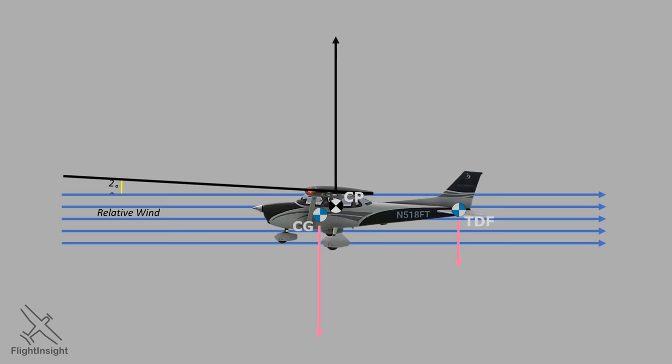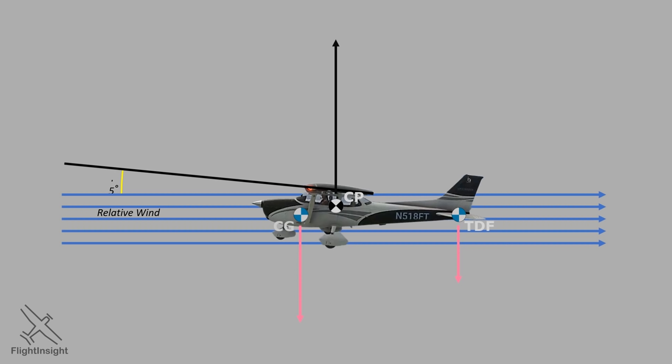But if we don't increase weight, and instead move that center of gravity forward a bit, let's say by having a backseat passenger come squeeze up front with us, that pitch-down tendency will become greater, and we'll need greater tail-down force to balance it. This will require more lift, and hence a higher angle of attack.